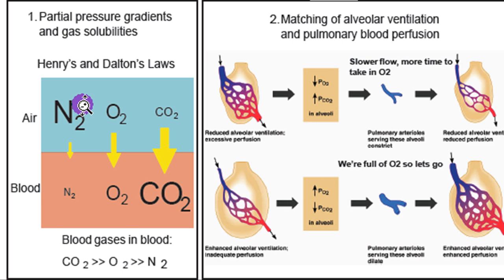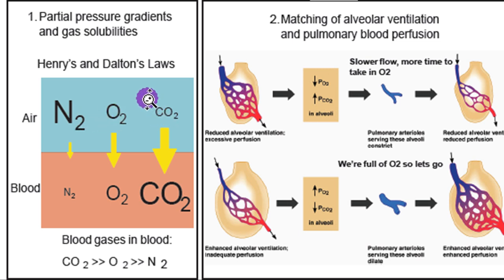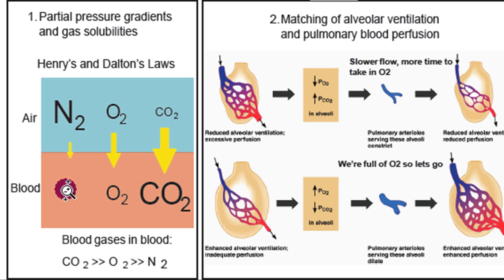Gases do not go into fluid equally. Even though there's more nitrogen around you, it doesn't like to go into fluid, including blood. So you actually have less nitrogen in your blood than CO2, because CO2, even though it's in lower quantity in the air, likes to go into fluid. In the air: more nitrogen than oxygen than CO2 — but in blood, there's less nitrogen, more oxygen, and more CO2. This tells us we need something to help transport our oxygen, which we'll get to in step three.